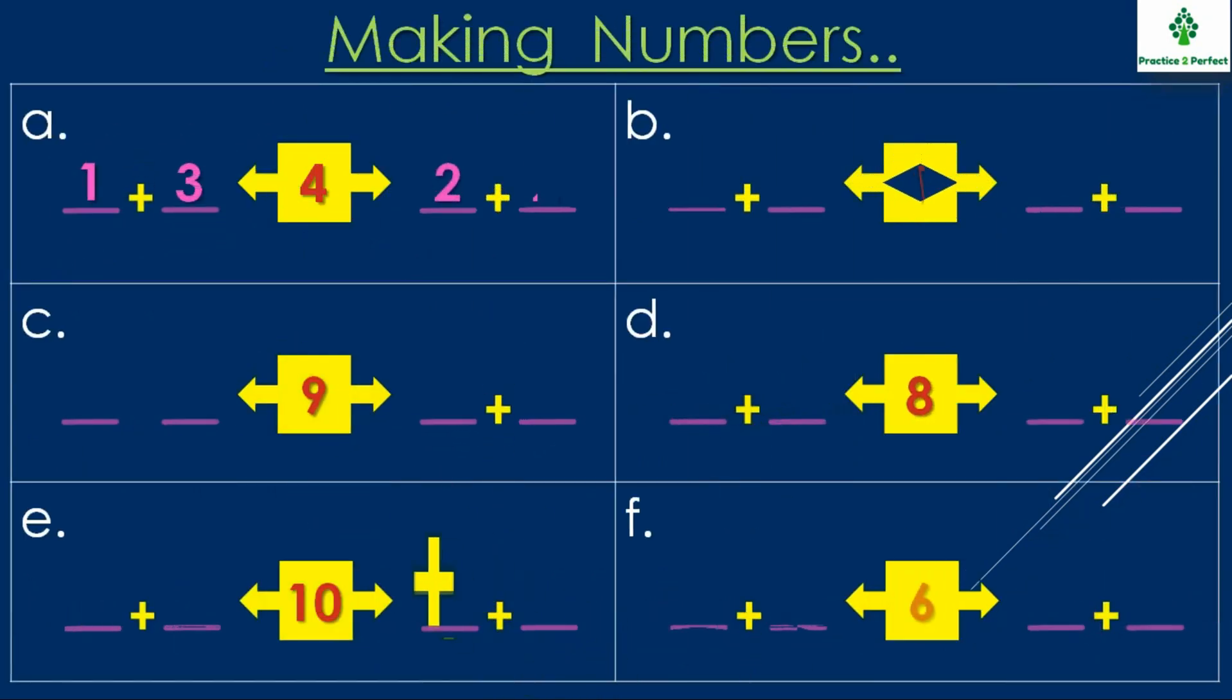In the first question, making numbers, you have to find two combinations of numbers to make the number given at the center. Let us look at an example. To make number 4, the first combination is 1 and 3 and the second combination is 2 and 2. So you can have different combinations. To make number 7 you will have many combinations, but here I have given two blank spaces so you can write two combinations of numbers.